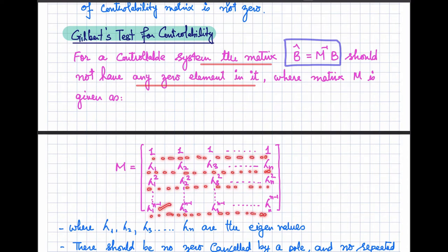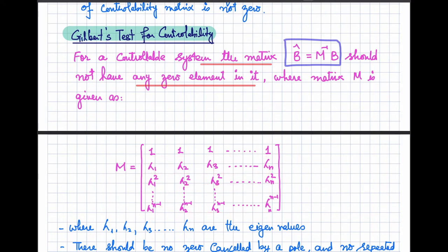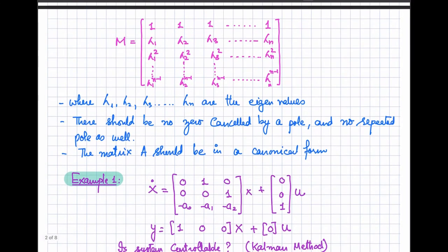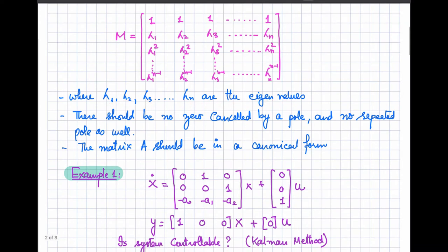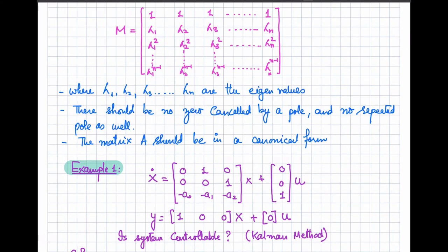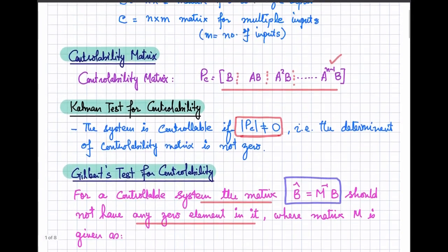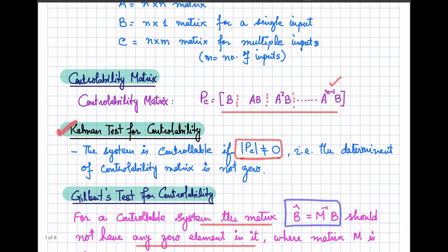The third row of M is the square of the eigenvalues, and so on, up to the row containing eigenvalues raised to the power 2n−1. The order of this matrix depends on the order of matrix A. The lambdas are the eigenvalues of the system. For the Gilbert test, there should be no zero cancelled by a pole and no repeated poles. Also, matrix A must be in canonical form to apply Gilbert's test; otherwise, you must apply Kalman's test.